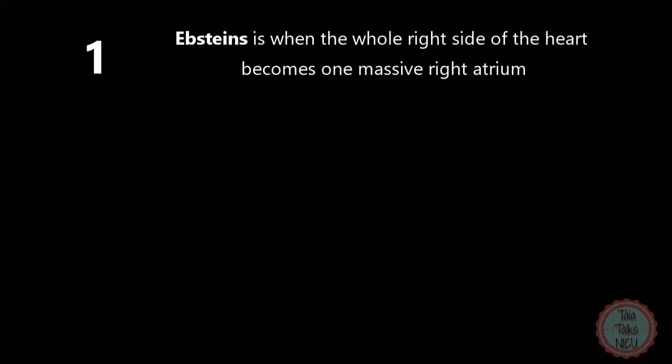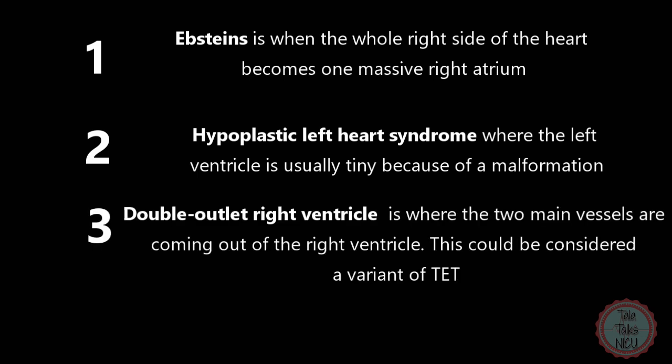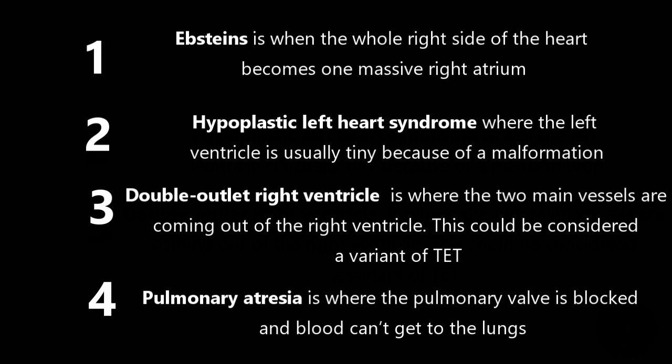There are four other congenital heart diseases, mostly cyanotic, that you should know about, but they don't begin with T. The first is Ebstein's anomaly, where the babies have a huge heart and the whole right side becomes kind of one huge right-sided atrium. The second is hypoplastic left heart, where the left ventricle is just not formed normally and the whole right side is responsible for getting blood to the systemic circulation — these are bad. The third is double outlet right ventricle, where both the aorta and the pulmonary artery are coming out of the right ventricle — an extreme version of tetralogy of Fallot. And the fourth is pulmonary atresia, where there is basically no blood coming out of the right ventricle, and these babies will appear very blue.